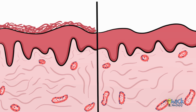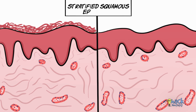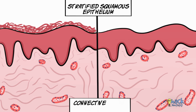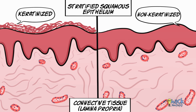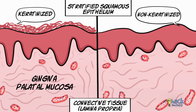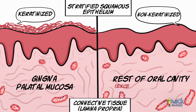The two main components of the oral mucosa are the stratified squamous epithelium and the underlying connective tissue called the lamina propria. The epithelium is of two types: the keratinized and the non-keratinized epithelium. While the gingival and the palatal mucosa are keratinized, the non-keratinized epithelium lines the rest of the oral mucosa.